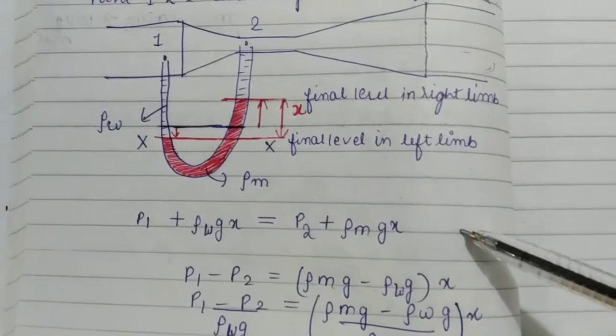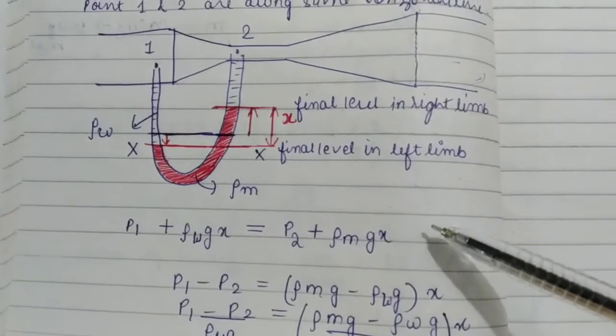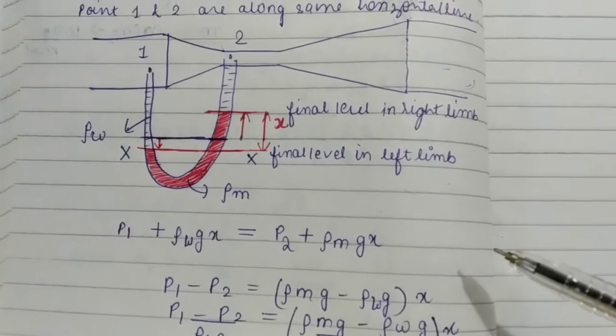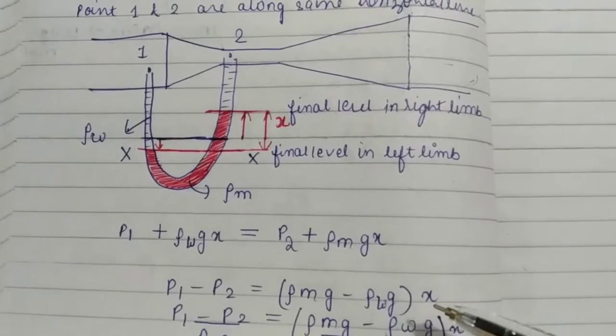This is the case when the manometer is having a fluid which is heavier than what is flowing in the pipeline. So here water is flowing. That's why I have used mercury.